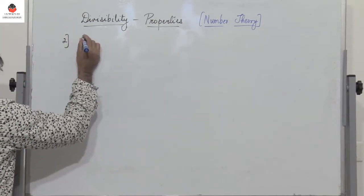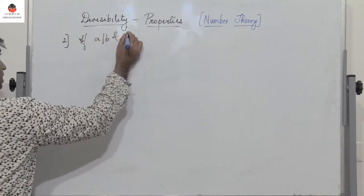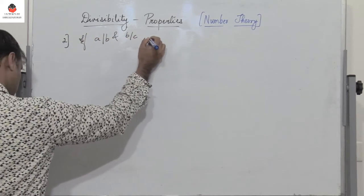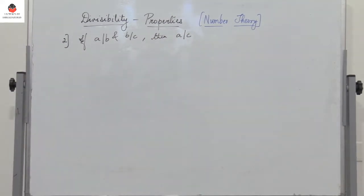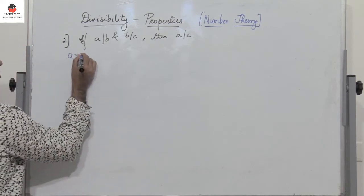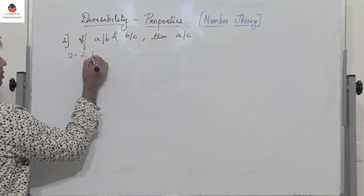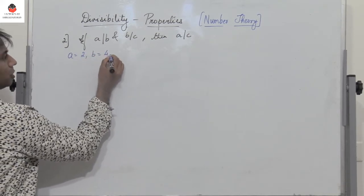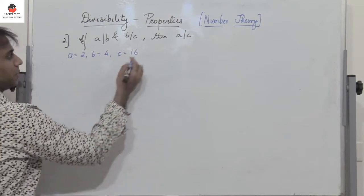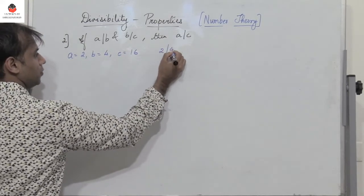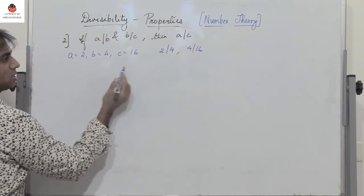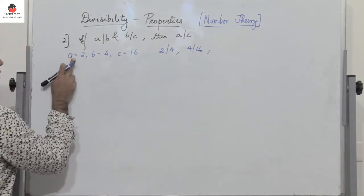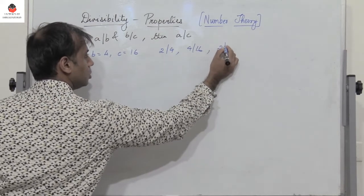The second property: if A divides B and B divides C, then we conclude that A divides C. Let's first take an example. If A equals 2, B equals 4, and C equals 16, we know that 2 divides 4 and 4 divides 16, and also 2 divides 16.